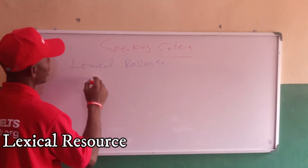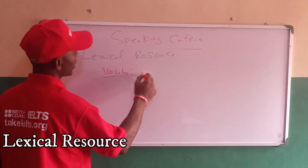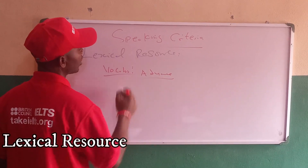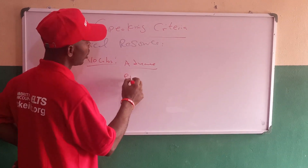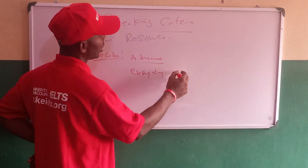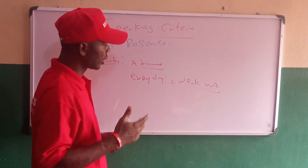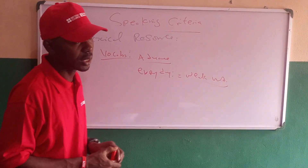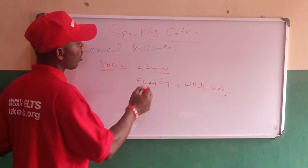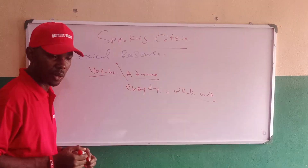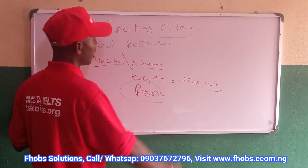Lexical resource deals with vocabulary, or what you call vocabs. Under this, you look at advanced words. IELTS doesn't want you to use too much of everyday words — those are called weak words. If you use too many everyday words, it makes your sentences weak. So you are going to use advanced words, but not just any advanced words. Advanced words are words that relate to the question, that relate to the topic — it's called register in standard English.